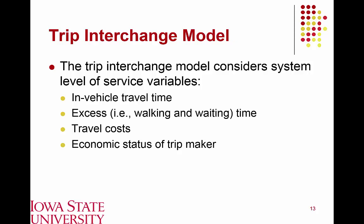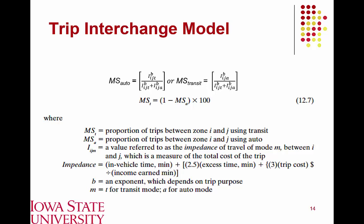We would also expect differences based on the economic status of the trip maker — persons with higher income may be more willing to drive or take a specific transit mode even if it's more expensive. The trip interchange model calculates an impedance factor, which takes in-vehicle travel time, excess time (walking and waiting), and the cost of the trip, converting everything into equivalent minutes. The model assumes that people tend to overestimate time spent walking and waiting, so excess time is weighted by a factor of 2.5 — people are two and a half times more sensitive to that waiting time.